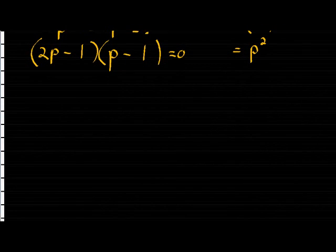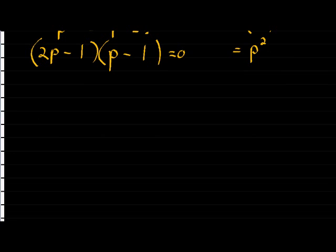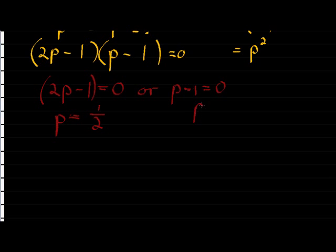So at this point, we can solve p. We're getting p on its own. So we get 2p minus 1 is equal to 0, or p minus 1 is equal to 0. Now we can go ahead and solve for p. In this case, we get that p is equal to 1/2, and in this case, we get that p is equal to 1.